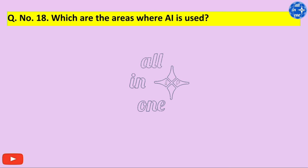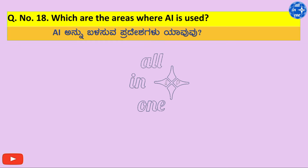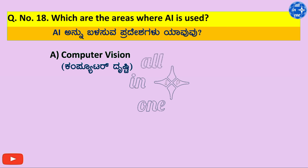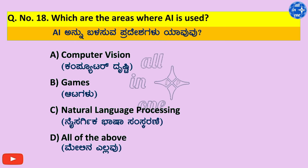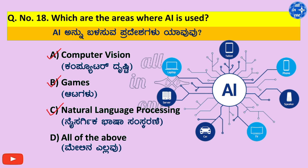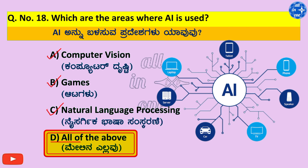Question number 18. Which are the areas where AI is used? A. Computer Vision, B. Games, C. Natural Language Processing, D. All of the above. Right answer is D. All of the above — Computer Vision, Games, Natural Language Processing.